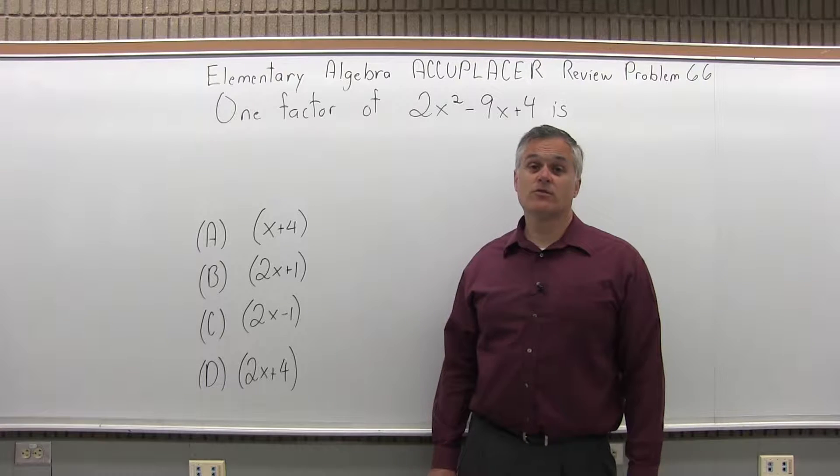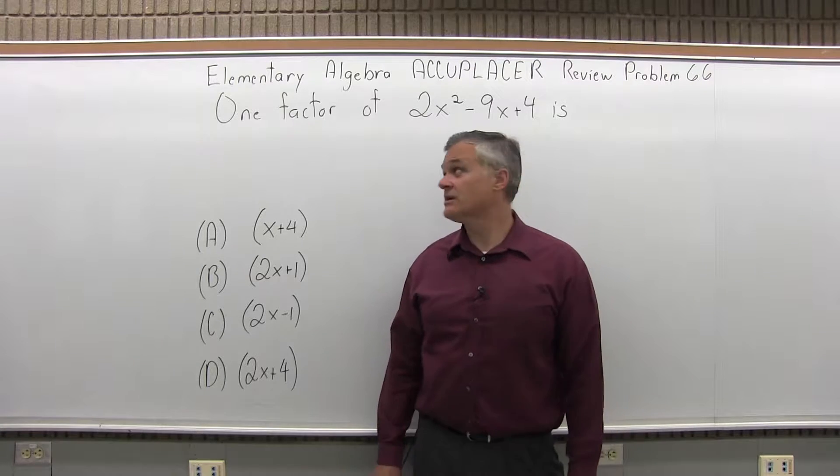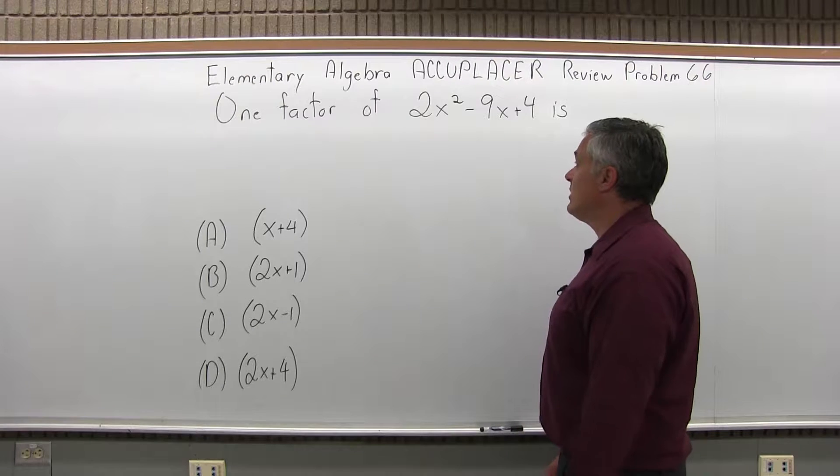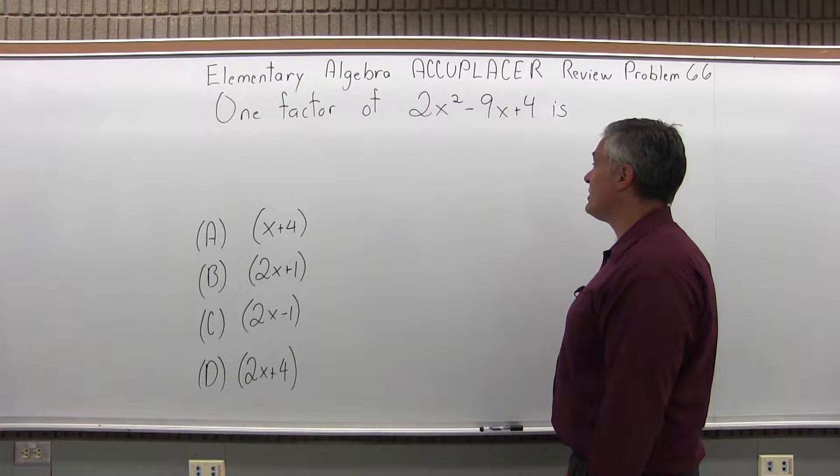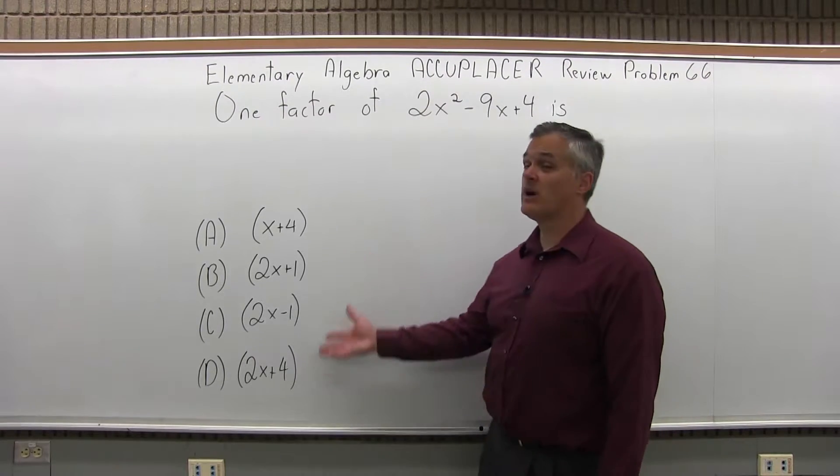This is the Elementary Algebra Accuplacer Review, Problem 66. The question says one factor of 2x squared minus 9x plus 4 is, and then we have four options to choose from.